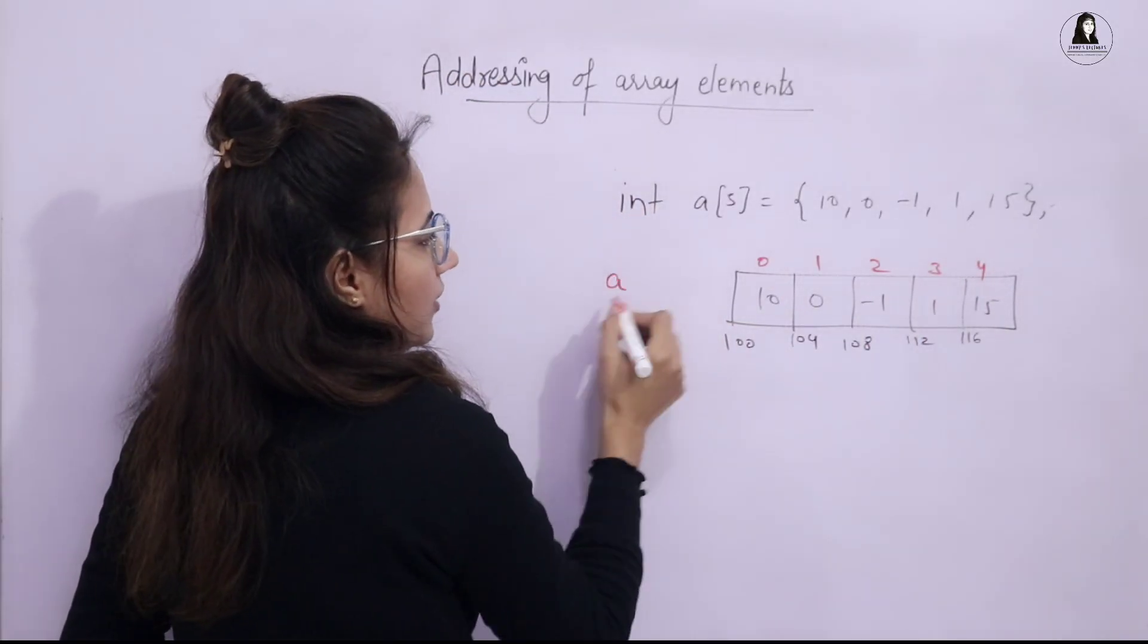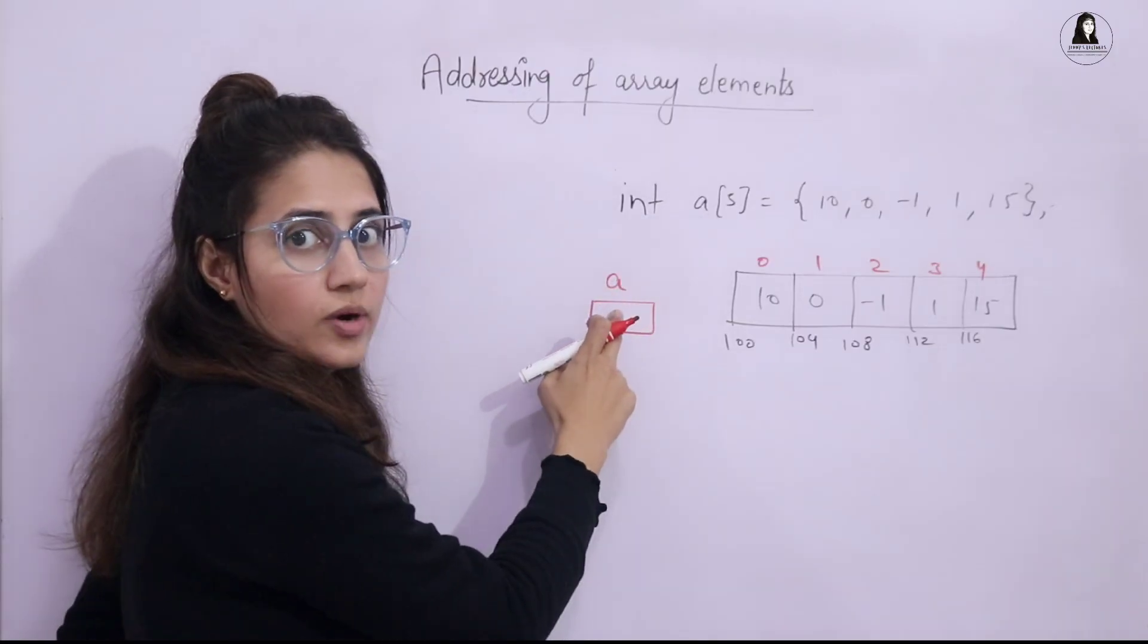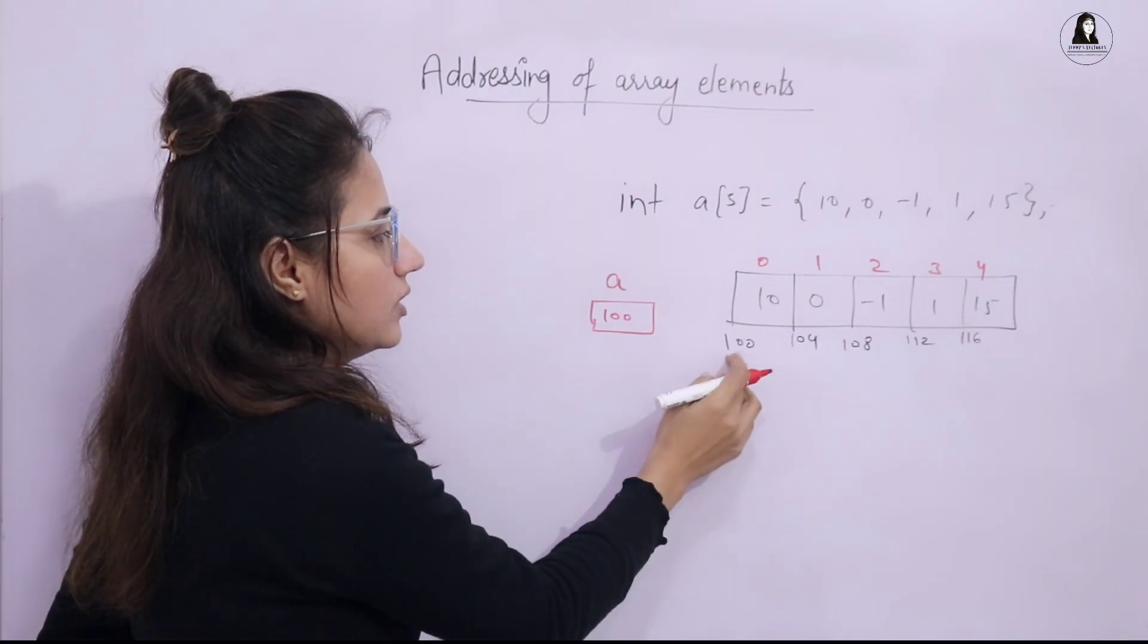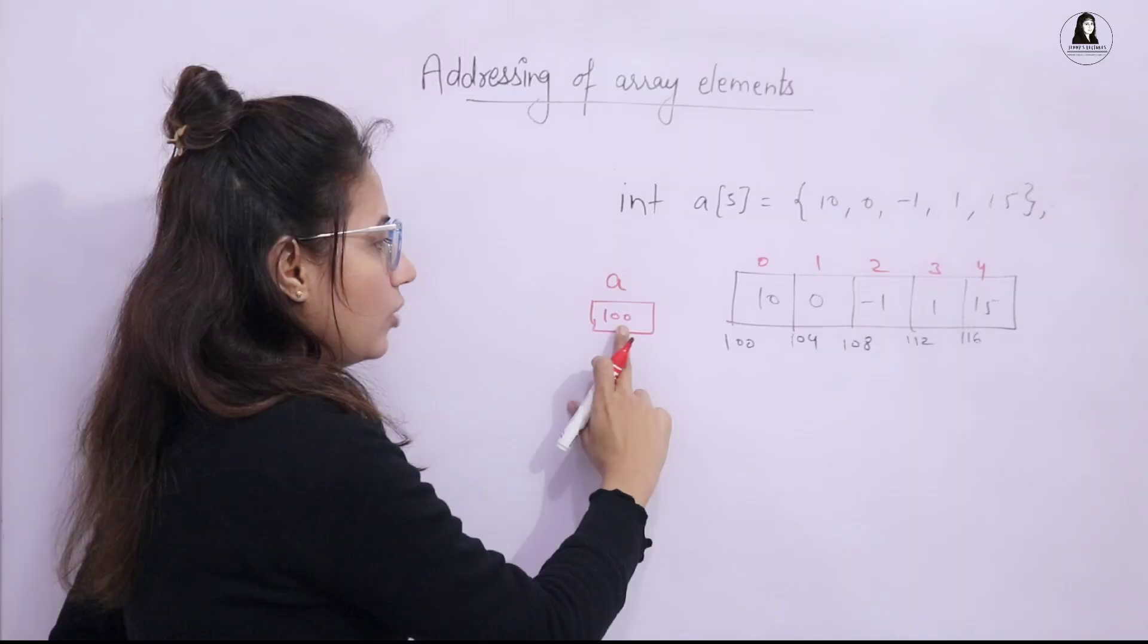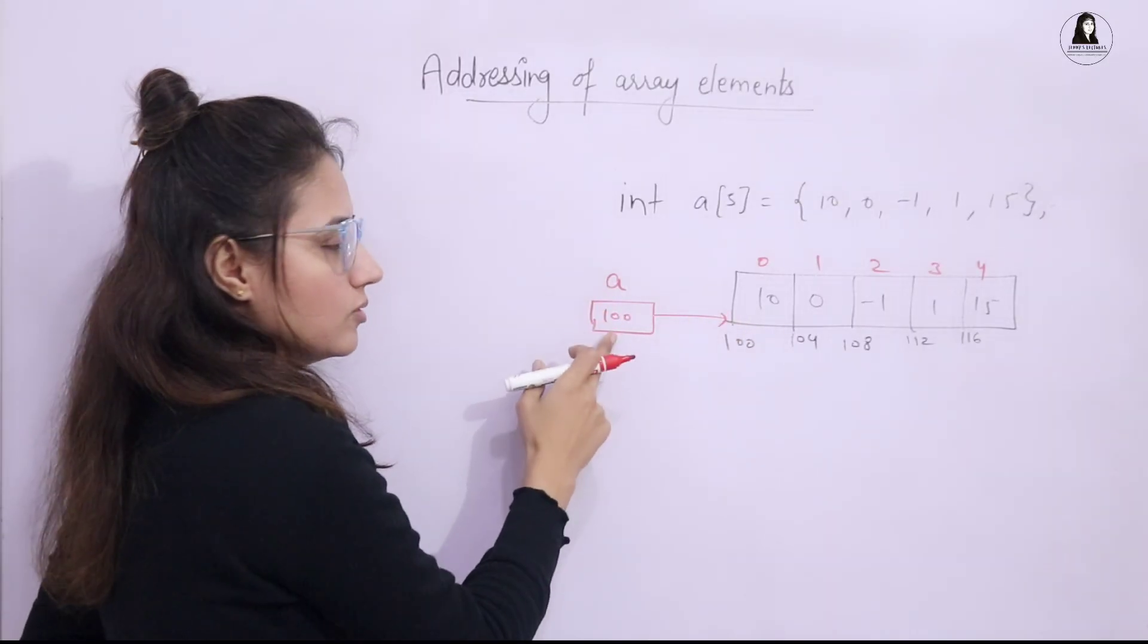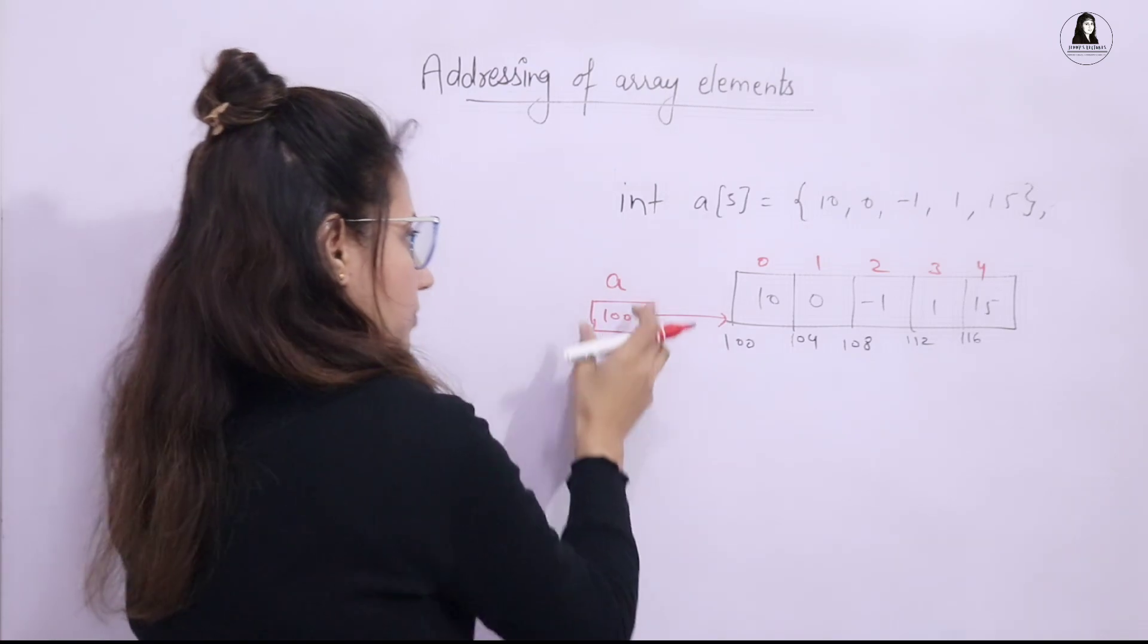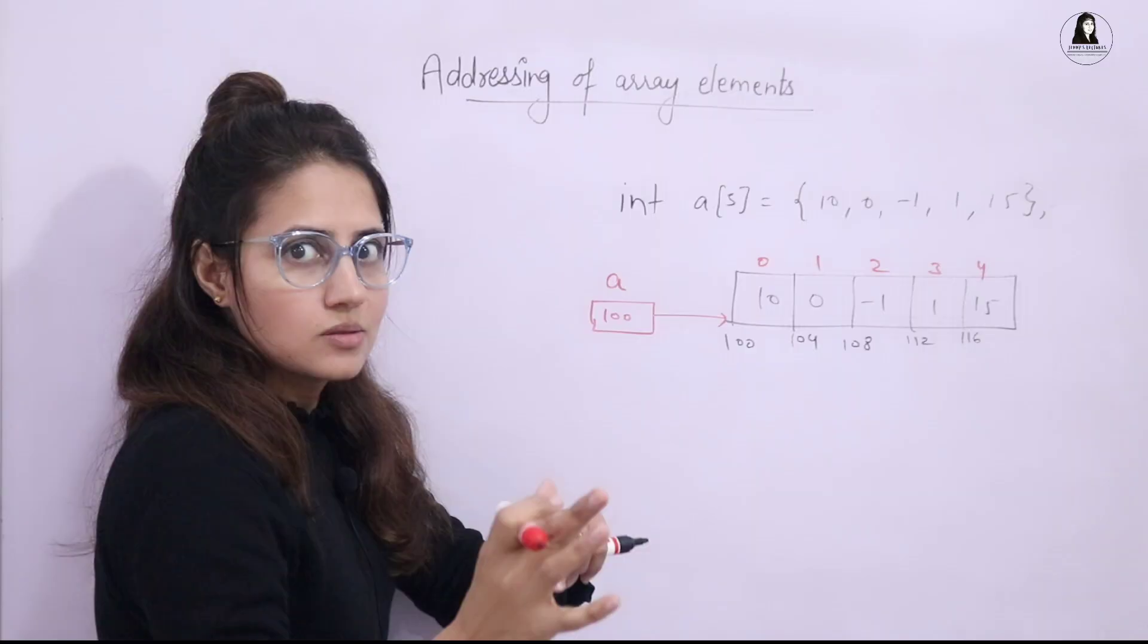This is what array name a and in array here, what is to be stored? The base address of the array. Base address is 100 or you can say the address of first element of array. So 100 is to be stored in. So this is pointing to here, array name a. So I have told you like internally, implicitly the array name is acting as a pointer, except in a few cases.